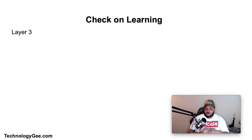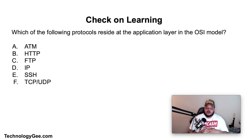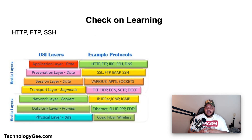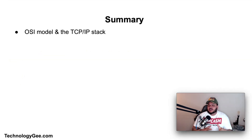Next question: Which of the following protocols reside at the application layer in the OSI model — ATM, HTTP, FTP, IP, SSH, TCP, or UDP? There are multiple correct answers. The correct answers are HTTP, FTP, and SSH. These are all specific protocols that run on the application layer of the OSI model.